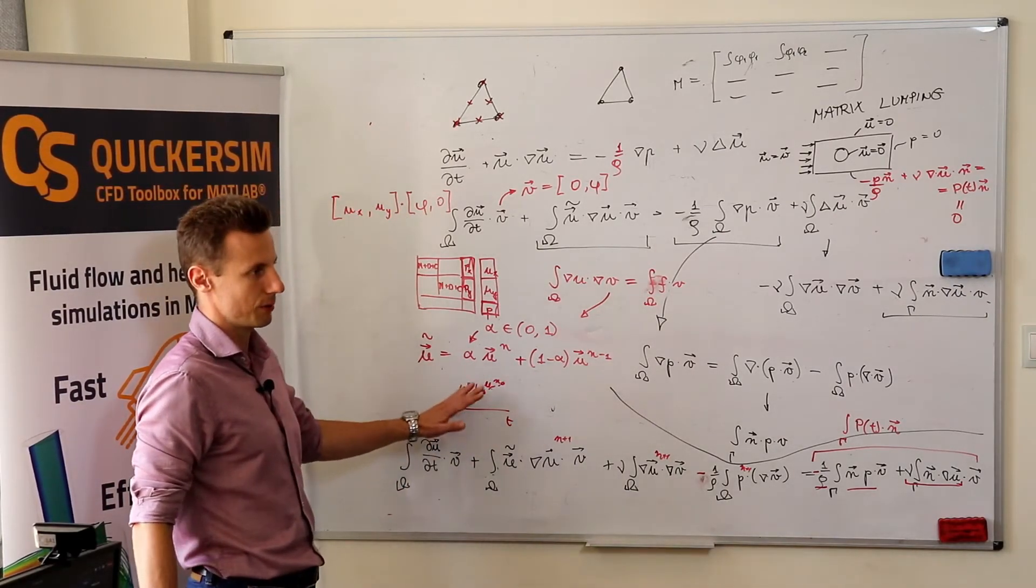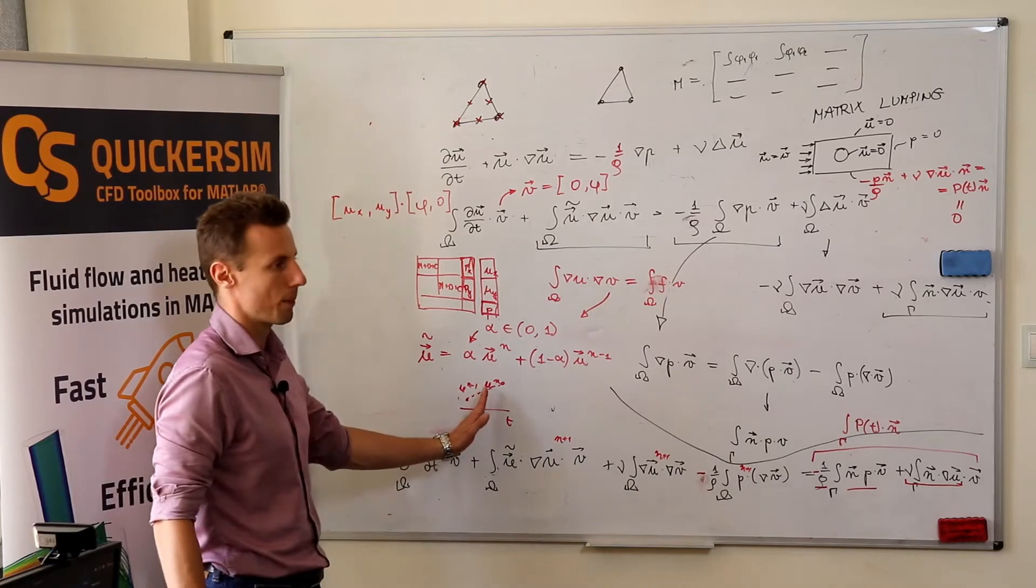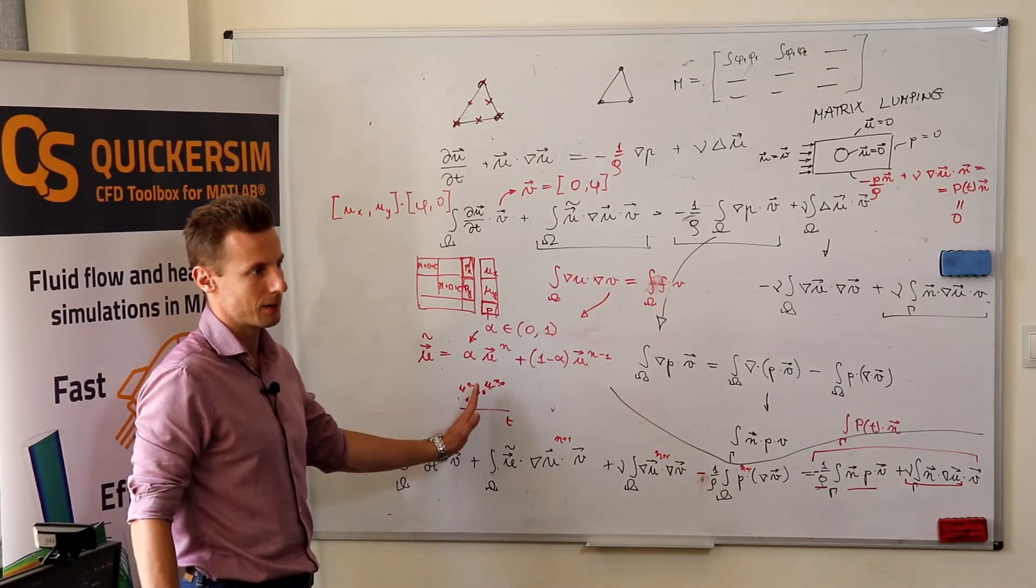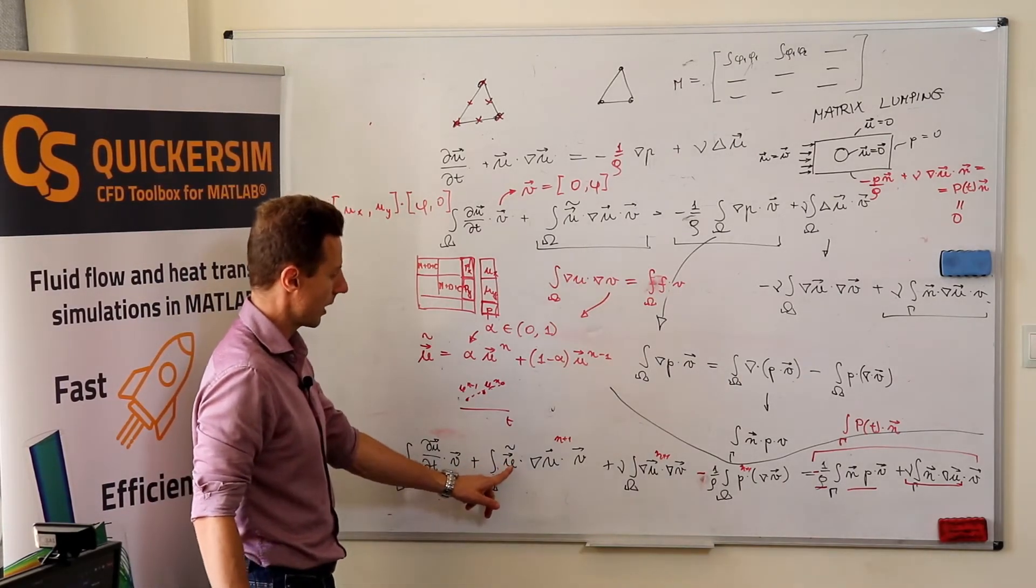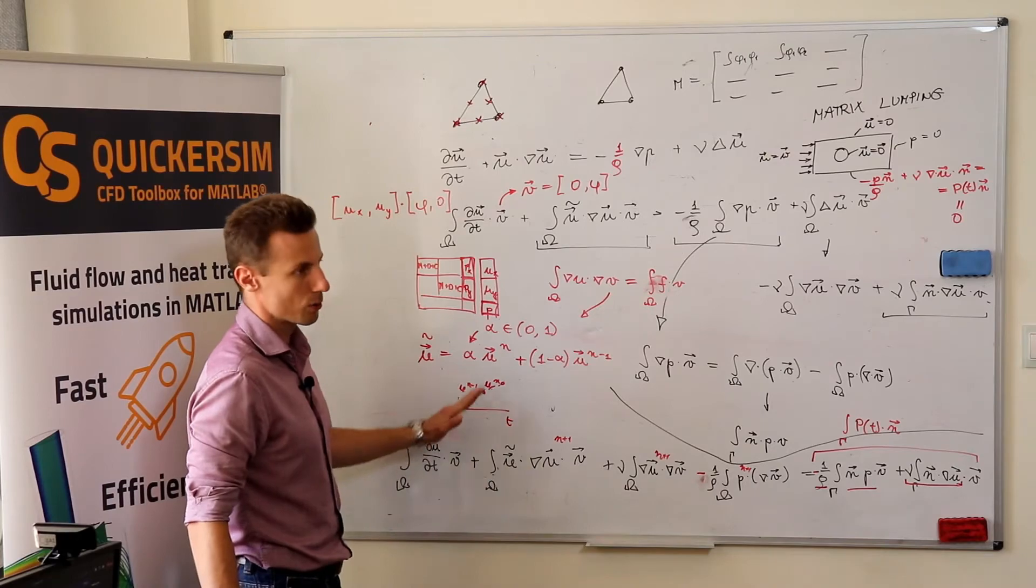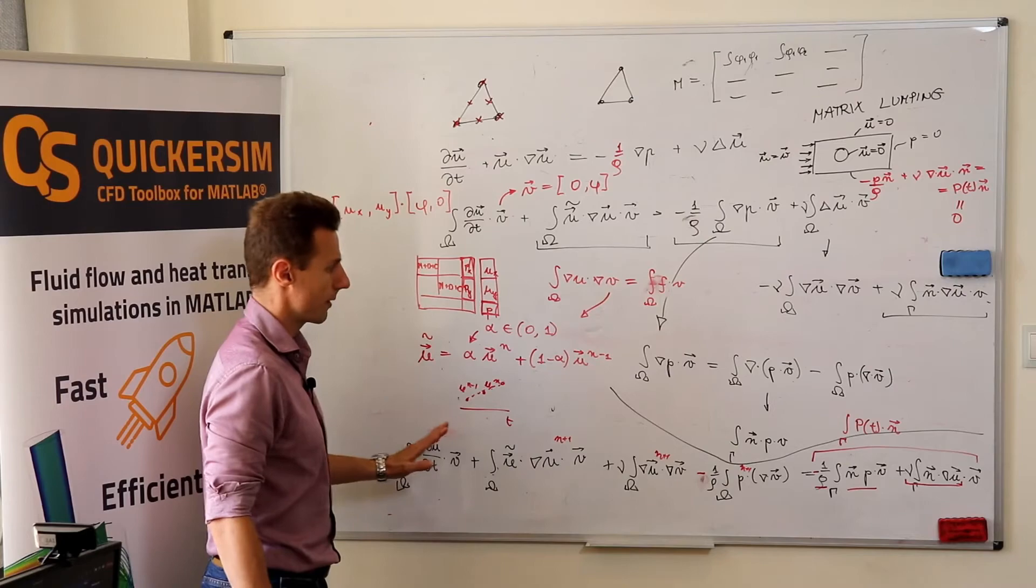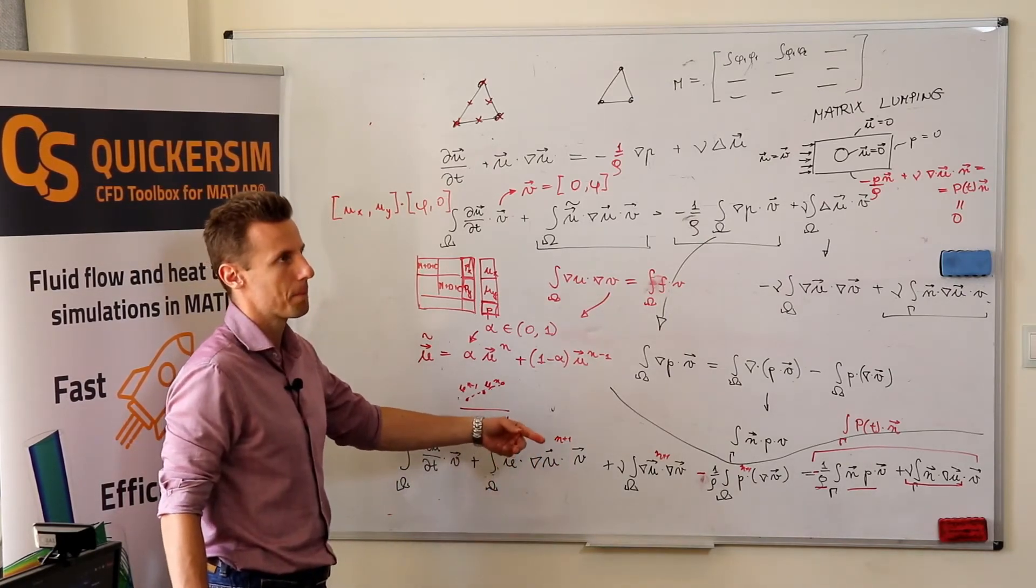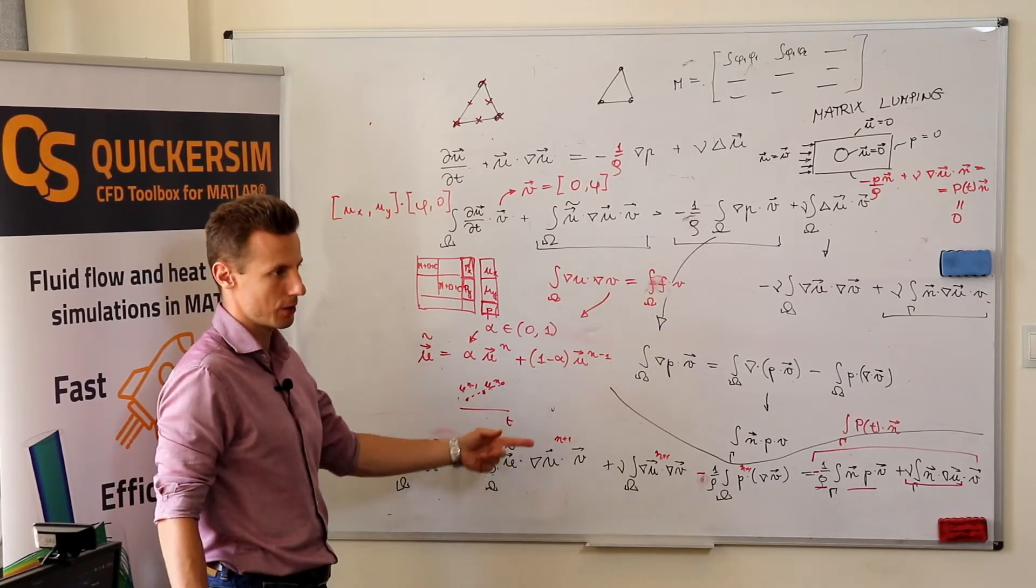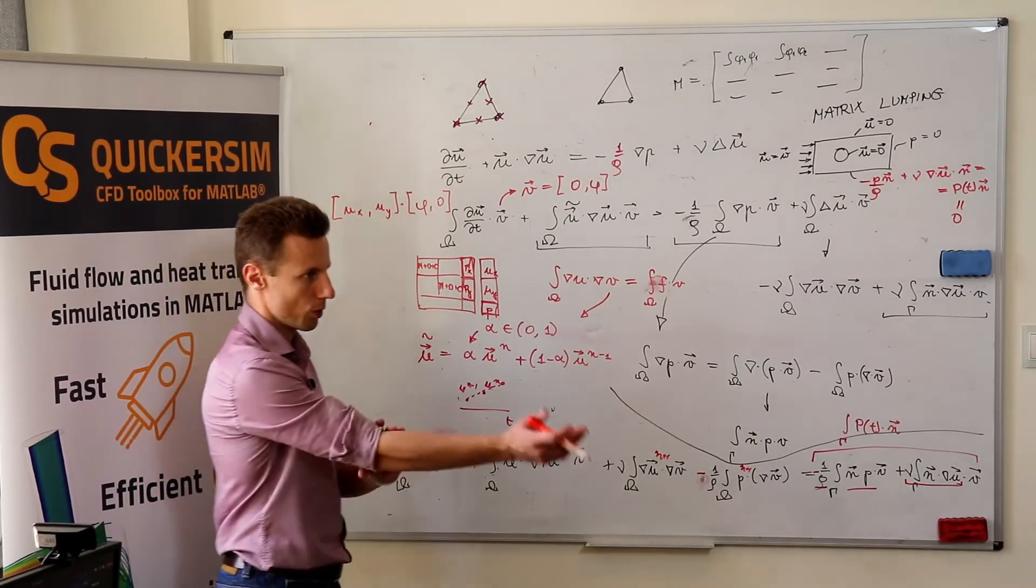What people also do is extrapolation to the new time step. Because if it behaves this way, probably extrapolation is some better guess and some better approximation than taking low-order approximation from the previous time step. So, you can either use the previous time step or use extrapolation to the new time step or such schemes that do not do any sub-iterations, they exist.